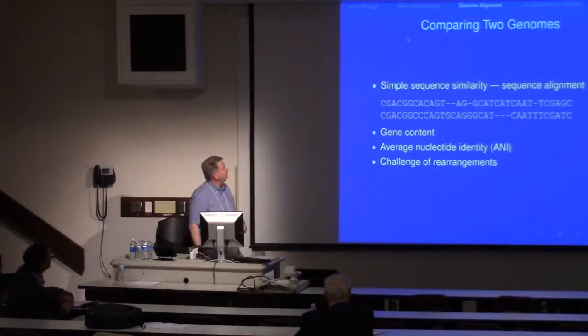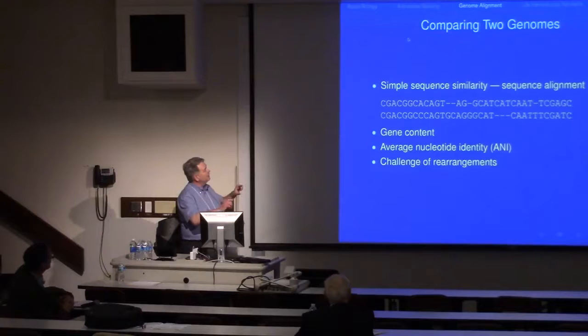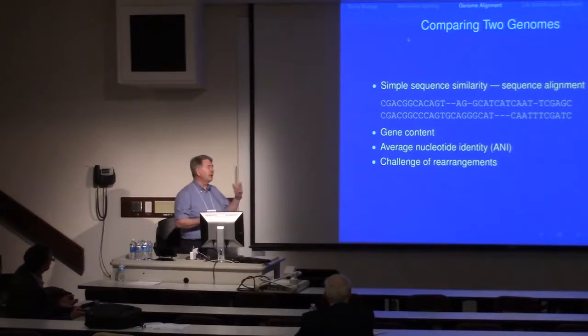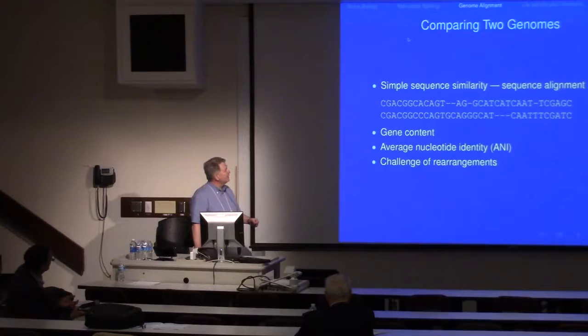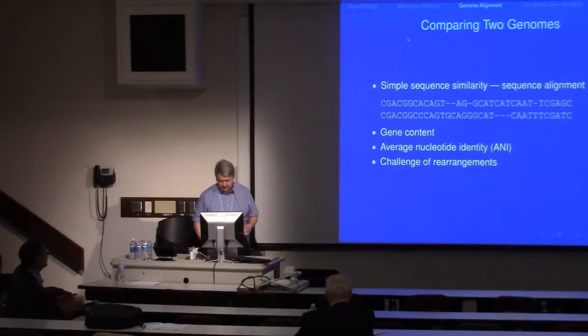We were interested in comparing two genomes to see how similar they were. The traditional way is sequence alignment — matching up characters with spaces for insertions and deletions. You can also look at gene content, comparing which genes are in each genome. Another approach we looked at is average nucleotide identity: measuring how similar blocks in one genome are to blocks in another. In all cases, rearrangements are a very challenging situation.